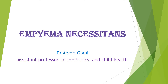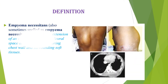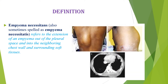Welcome back everyone. Today's short lesson is about empyrema necessitans. Empyrema necessitans refers to the extension of an empyrema out of the pleural space and into the neighboring chest wall and surrounding soft tissues.